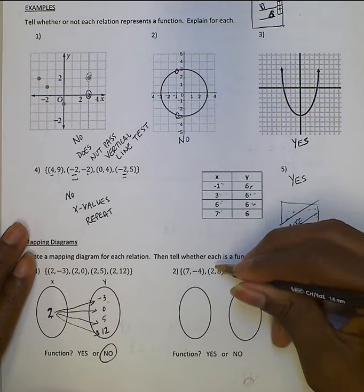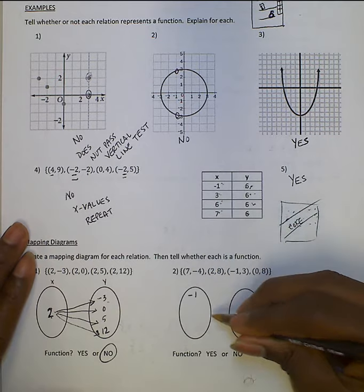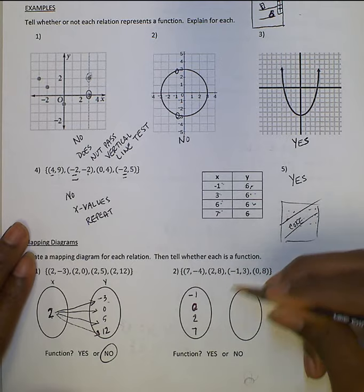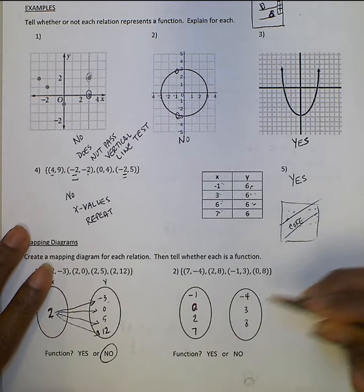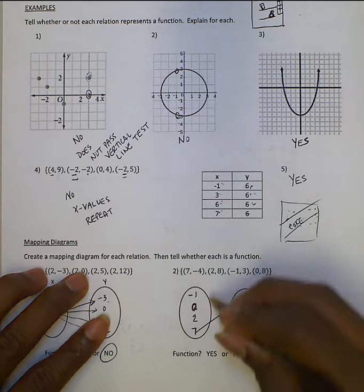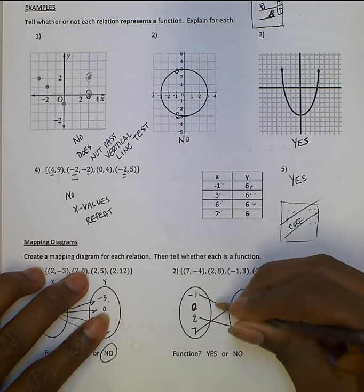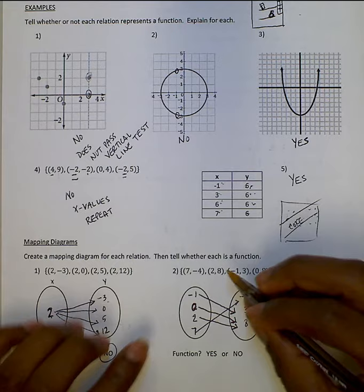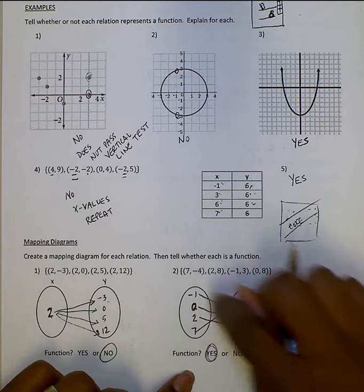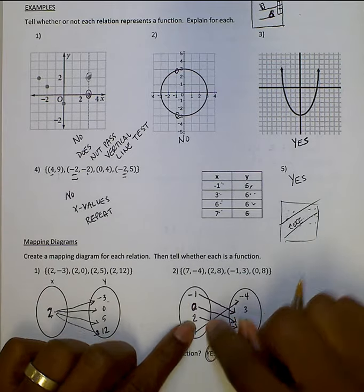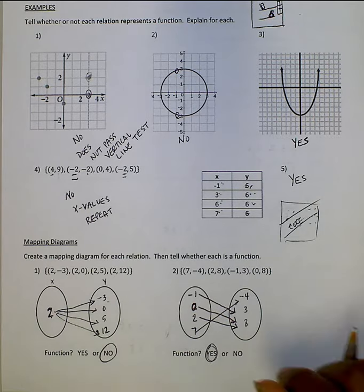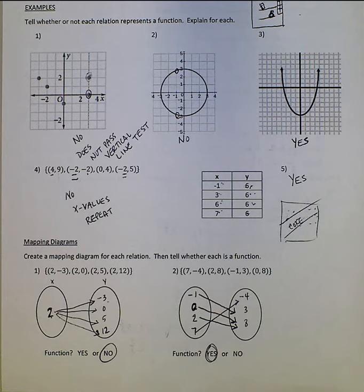For number 2, I write my x-values: negative 1, 0, 2, 7. My range values listed least to greatest: negative 4, 3, 8. So 7 maps to negative 4; 2 maps to 8; negative 1 maps to 3; 0 maps to 8. Is this a function? A lot of people want to say no because there are two 8s, but it is a function. We're controlling the input — when I put in negative 1, I know I get 3. When I put in 0, I know I get 8. When I put in 2, I know I get 8. Each input has a sure outcome, so it's a function.